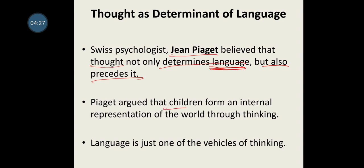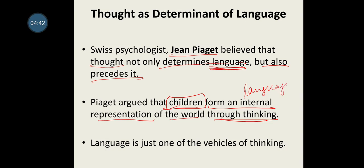Piaget argued that children form an internal representation of the world through thinking. Babies cannot speak — they have no language — yet they can internally represent the world. Language is just one of the vehicles of thinking, like a vehicle only for thinking.